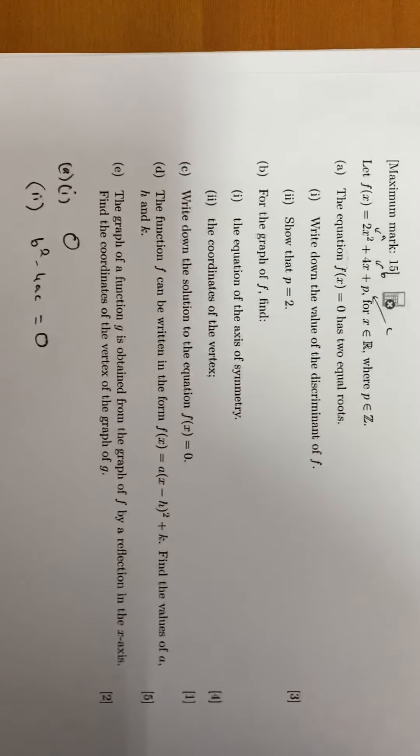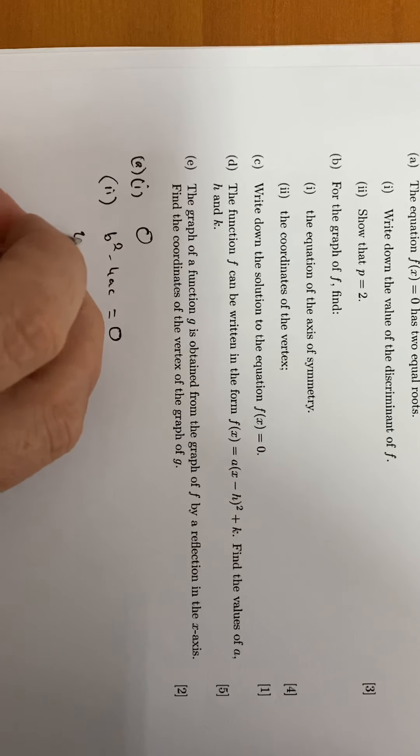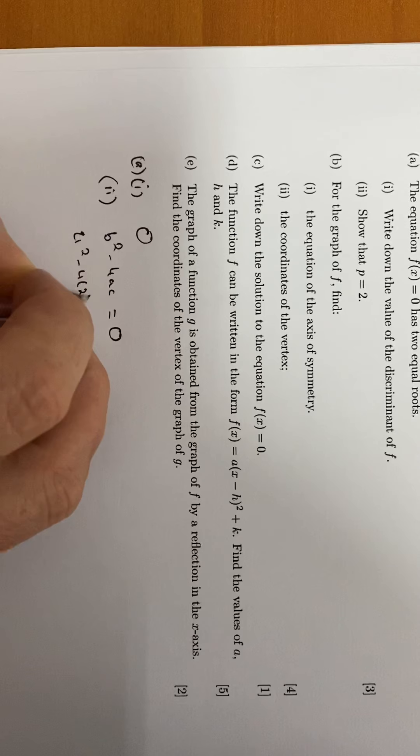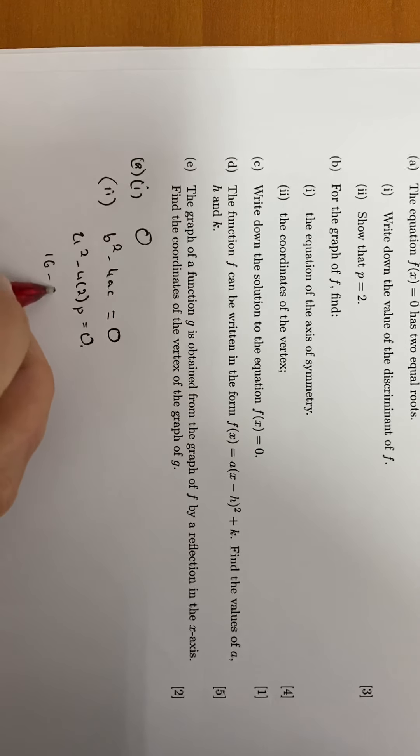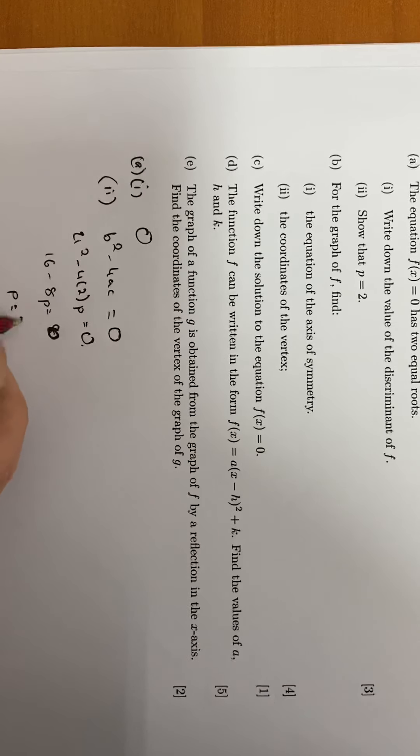Subbing those in, we get 4 squared minus 4 times 2 times p equals zero. So we get 16 minus 8p equals zero. Rearranging, p is equal to 2.